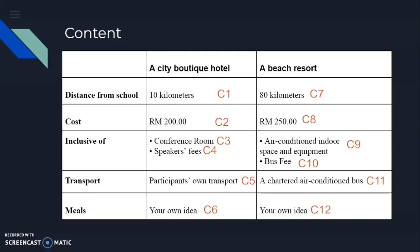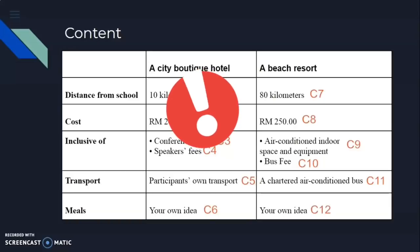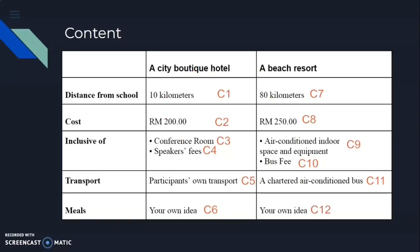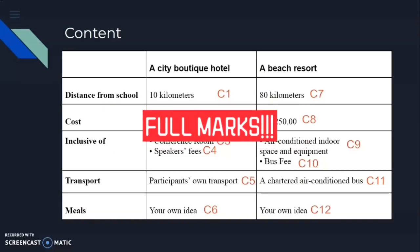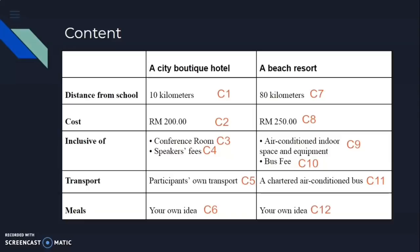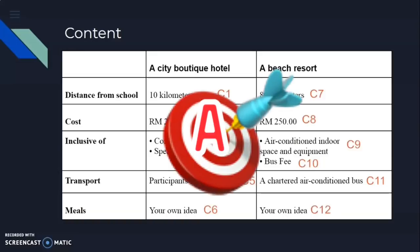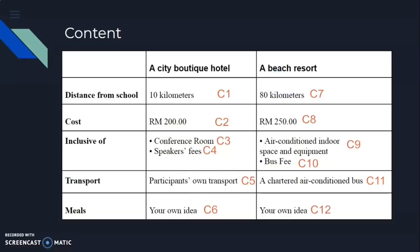I have to repeat because it's very important. Bear in mind: by just mentioning all the content points given — even without any elaboration, even if your sentence is only very simple — you still can get full marks for content. However, credits go to your language part if you are able to elaborate or give examples to your points. And especially if you aim for an A in SPM English, you must elaborate and give examples for each of the content points.